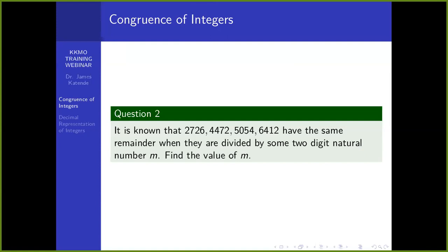A student explains their progress: if a number leaves a remainder R when divided by M, then the number is of the form MK plus R. So 2726 is MK₁ plus R, 4472 is MK₂ plus R, and 6412 is MK₄ plus R — the same R throughout. Whenever we subtract any of those numbers, the remainder vanishes, so M can divide the difference of any two of those numbers.